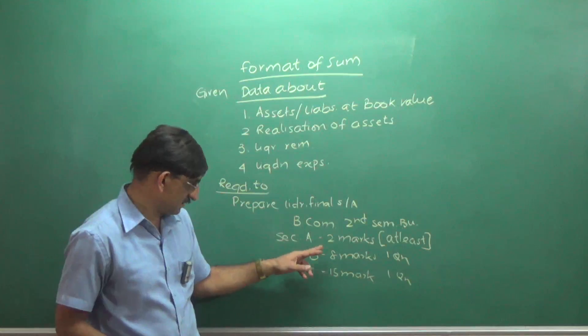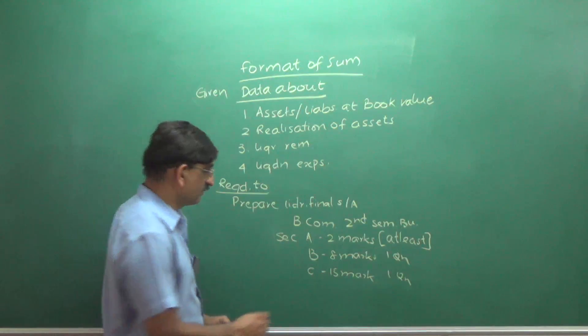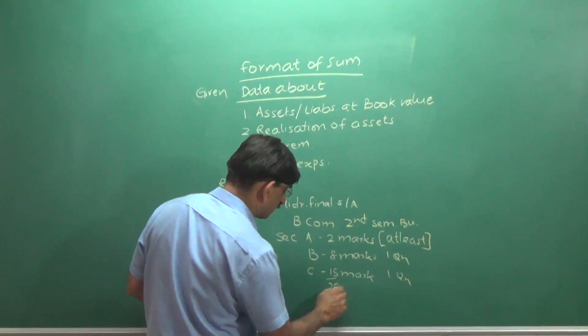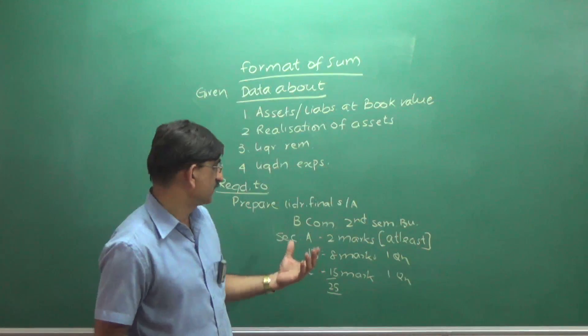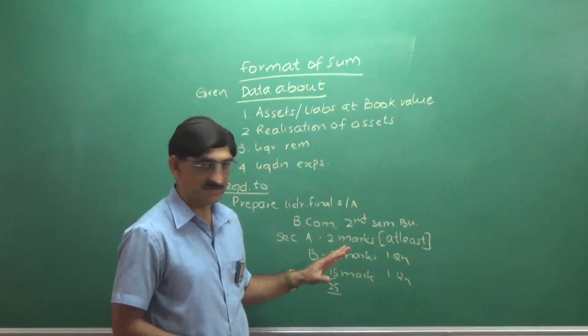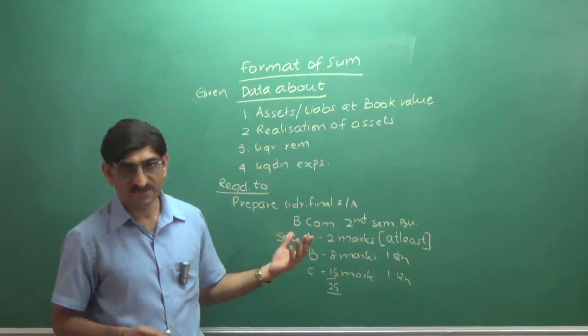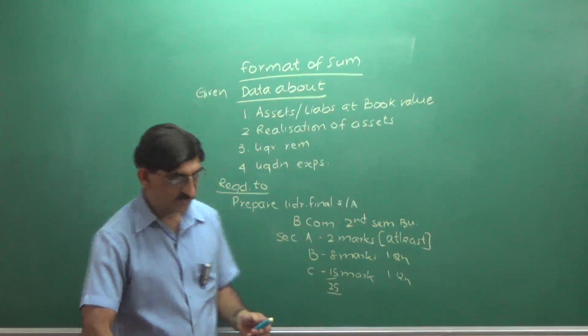Totally we will be getting two plus eight, ten, ten plus fifteen, twenty-five. Twenty-five marks in a question paper. So, if you are thorough in this chapter, you will get twenty-five marks. To be thorough in this chapter, it will hardly take a couple of hours. So, let's begin.